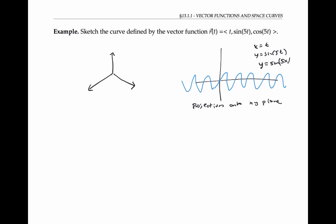Similarly, if we ignore the y component and just think about the x and z components, that's like we're graphing x equals T, z equals cosine of five T, or in other words, z equals cosine of five x. That's what we should see if we take the projection onto the xz plane.